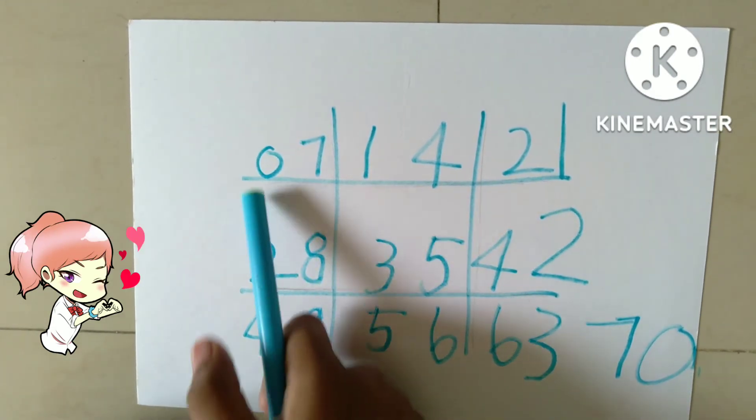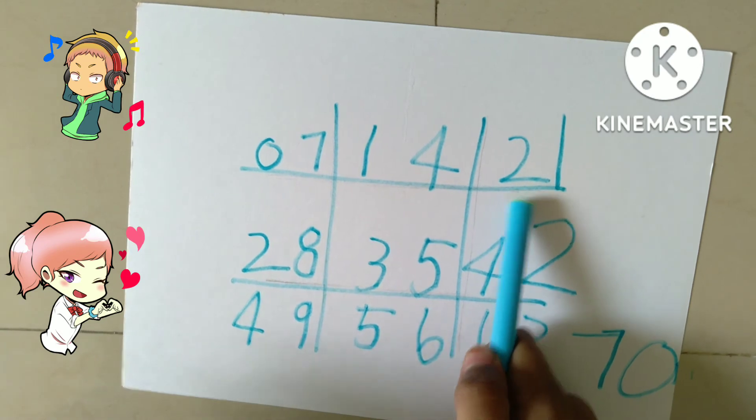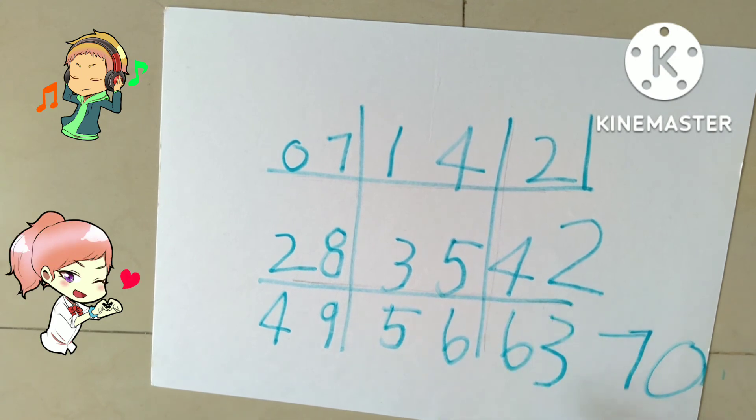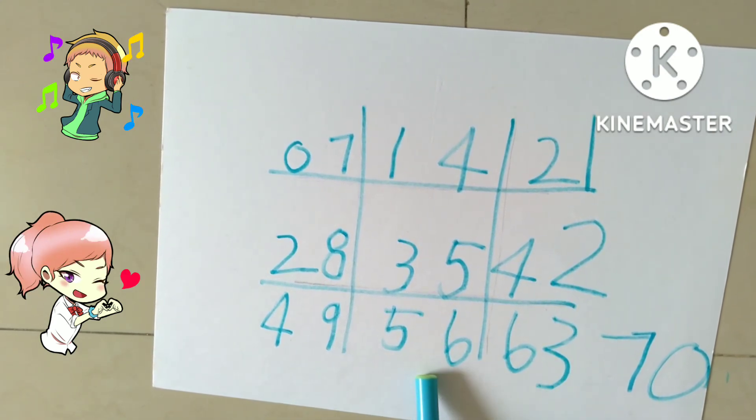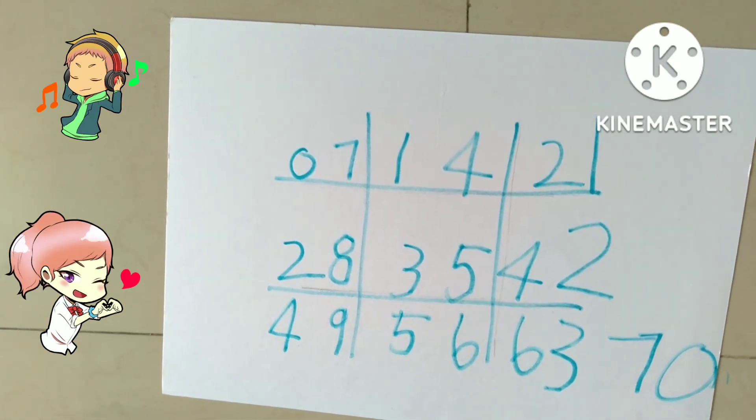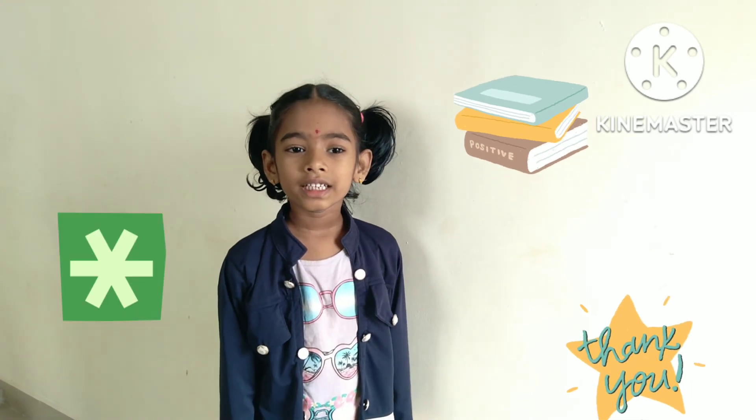7 ones are 7, 7 twos are 14, 7 threes are 21, 7 fours are 28, 7 fives are 35, 7 sixes are 42, 7 sevens are 49, 7 eights are 56, 7 nines are 63, 7 tens are 70. From here onwards you may feel easy with 7 table.